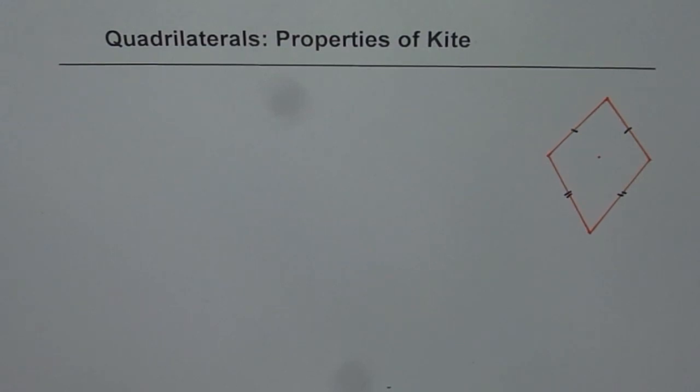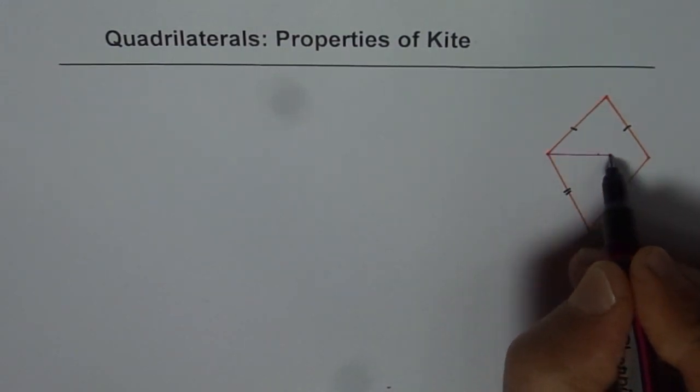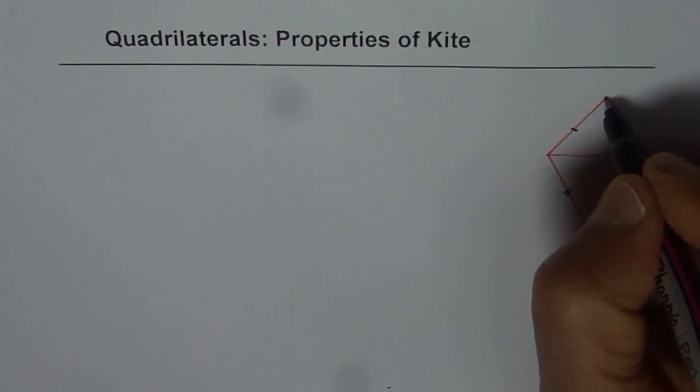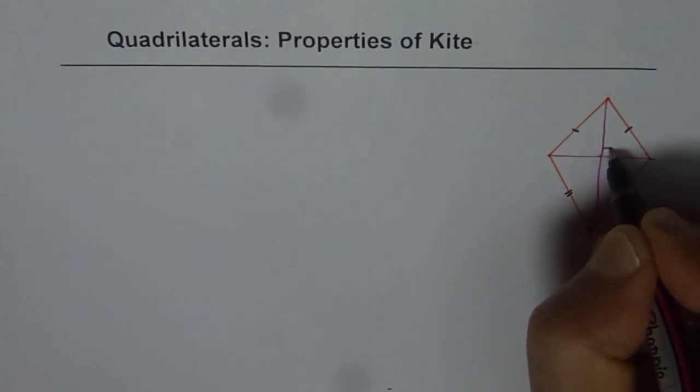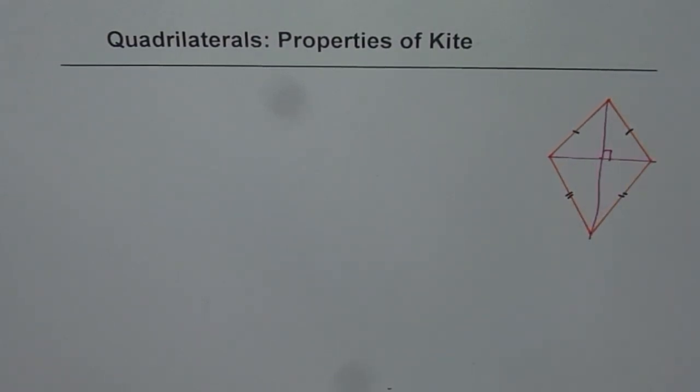And one very special thing is that if I draw the diagonals of a kite, then what happens? They intersect at 90 degrees. So that makes it very special.